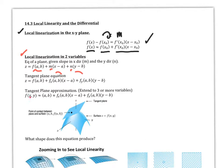We can also extend to the tangent plane approximation, and extend it to more variables if you wish. So f of x, y can be approximated by f of a, b, plus the change in the x direction, plus the change in the y direction. That gives us an approximation at some point (a, b), so in and around that area, that little plane is going to approximate the curve.